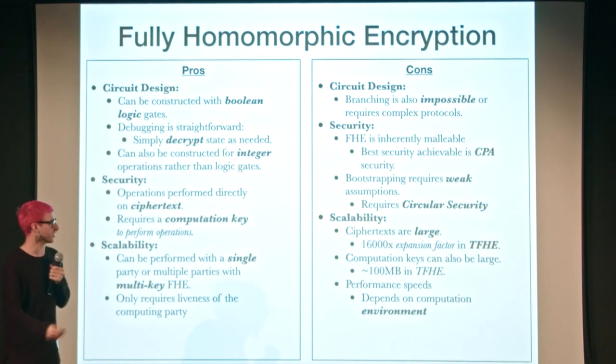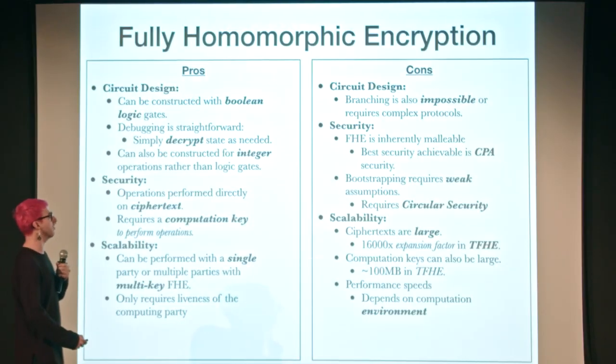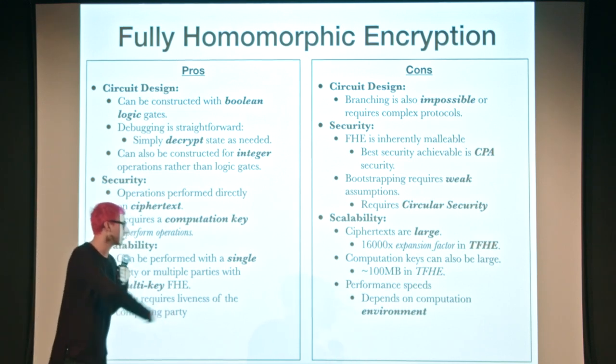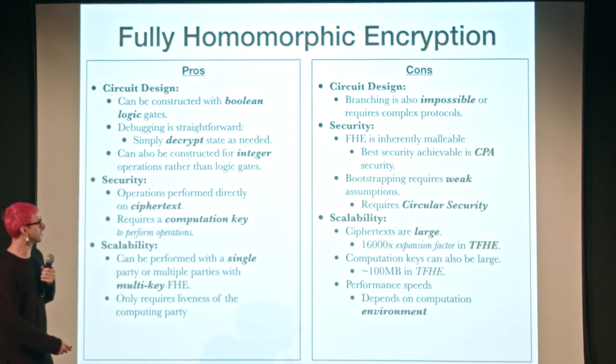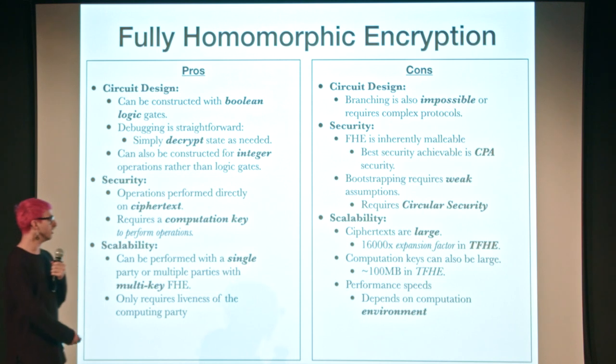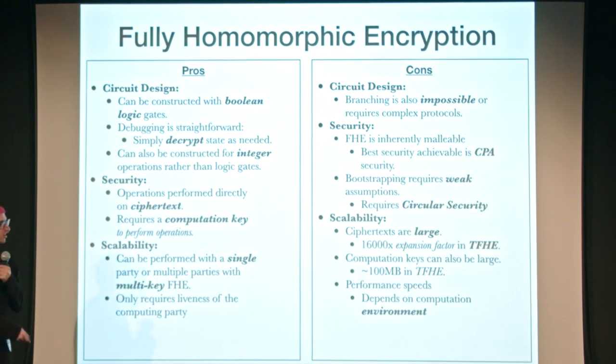You can literally think of a computation key as a homomorphically encrypted private key of the encryption key — this is called circular security. Matt Green has a fantastic blog post about this. Another problem is that ciphertexts are extremely large: there's a 16,000x expansion factor in TFHE, which is what NuCypher implemented in newFHE. Computation keys can also be large — around 100 megabytes in TFHE — and performance speeds are kind of slow depending on the computation environment.